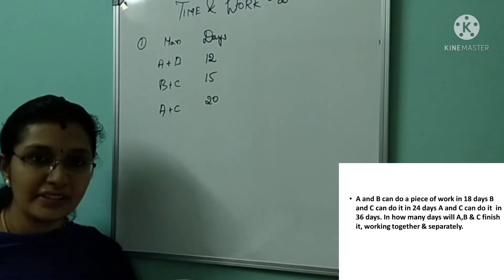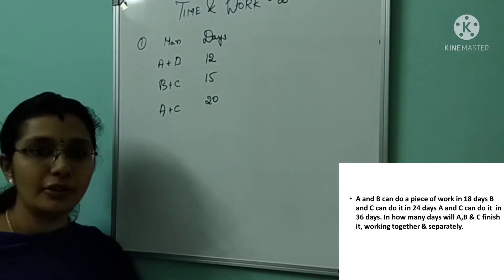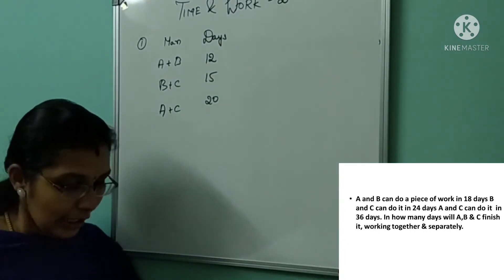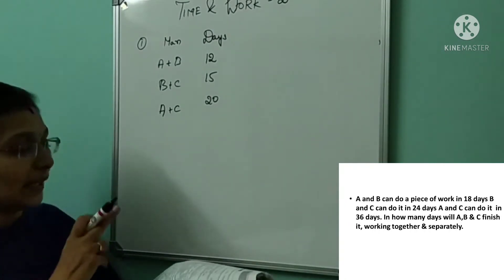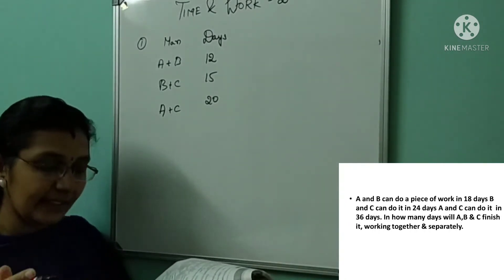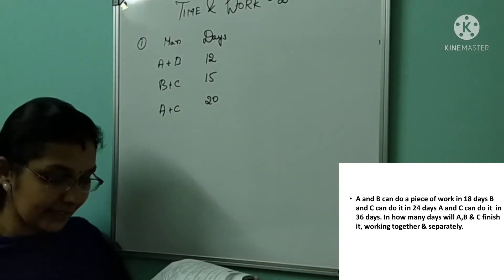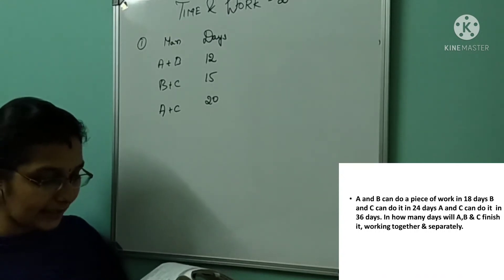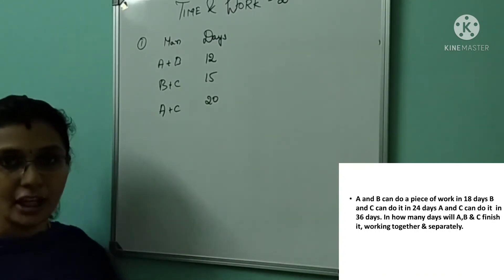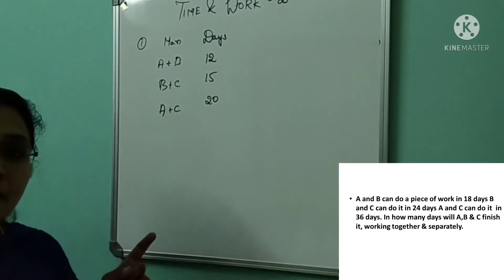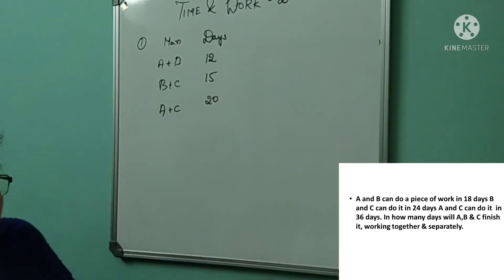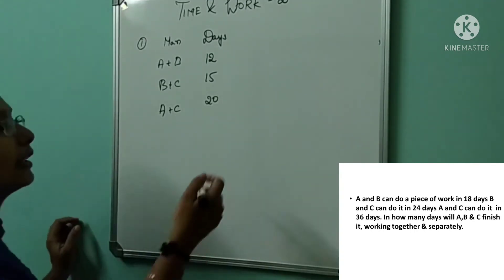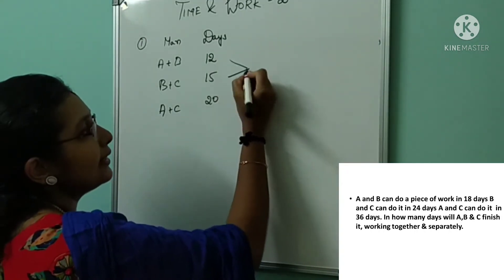Here is the next question — quite similar to the previous one, so try to solve it yourself. A and B can do a work in 12 days, B and C in 15 days, and C and A in 20 days. If A, B, and C work together, they will complete the work in how many days? There is only one part — find the time working together. First find the LCM.